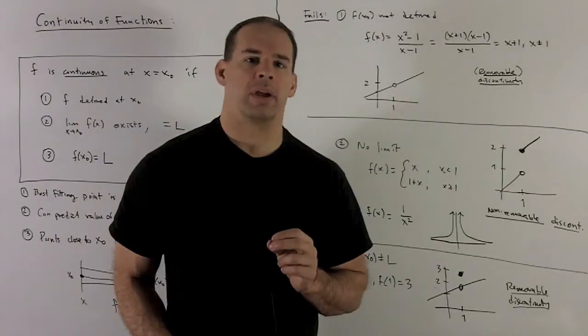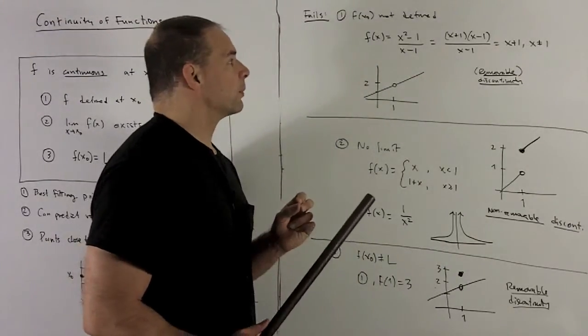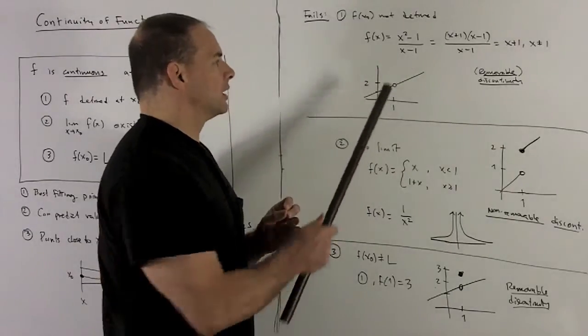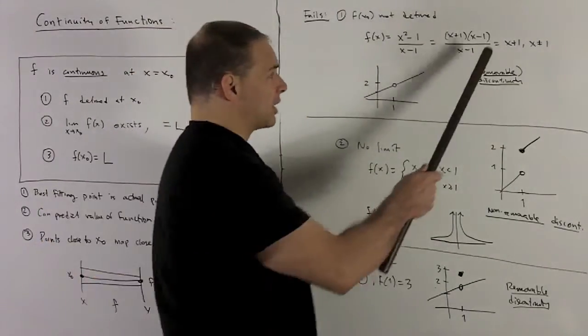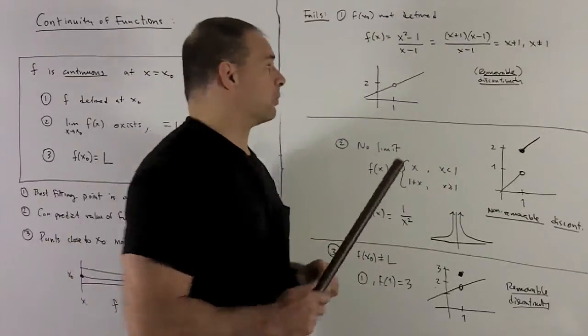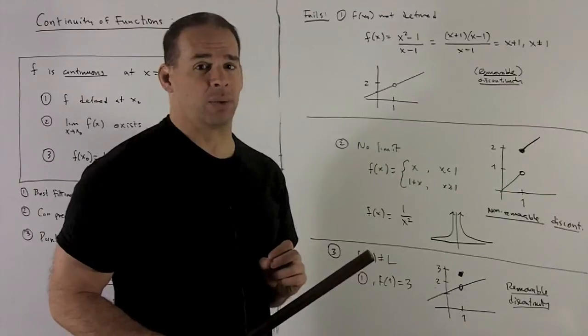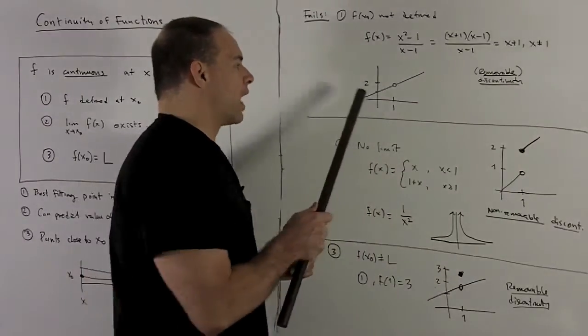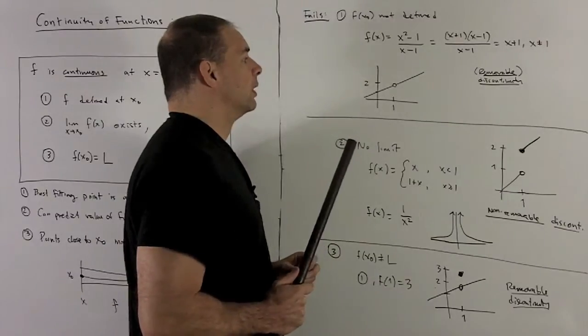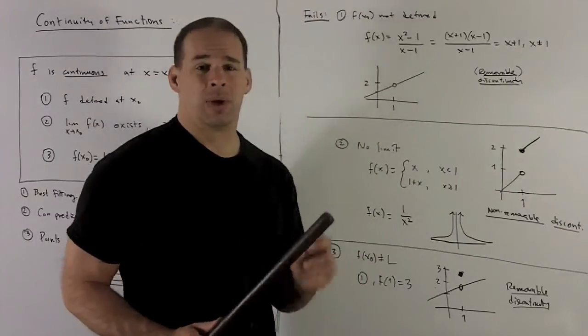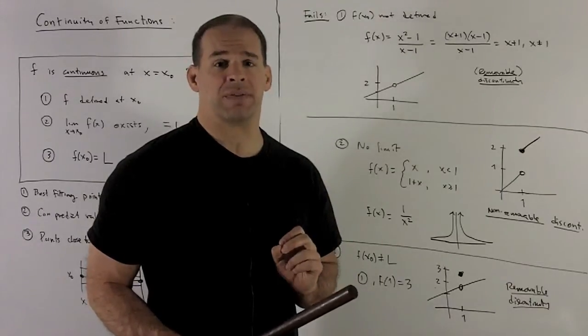So let's take a look at what can go wrong with continuity. For our first case, this guy we've seen before, take x squared minus 1 over x minus 1, we factor, we get our x plus 1, but the penalty from the original function is that we're not allowed to divide by 0, so I can't have x equal to 1. So our graph looks like this, with a hole above 1. So our function's not defined there, and we call this a removable discontinuity because you could fix it if you just filled in that point.